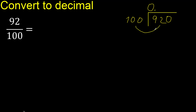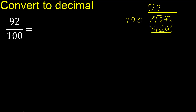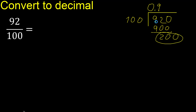920 is not less, therefore: 100 multiplied by which number is nearest to 920 but not greater? Multiply by 9 is 900, which is not greater. Subtract: 920 minus 900 is 20. There is no digit, therefore complete with 0 again. Write the decimal point only once. Bring down: 200.